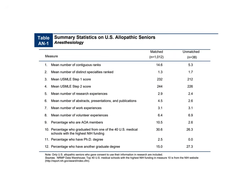The mean number of distinct specialties ranked is 1.3, meaning most people applying to anesthesia are solely applying to anesthesia, though some rank additional specialties. Unmatched students ranked 1.7 specialties, meaning they were more likely to hedge with a second specialty. The mean USMLE Step 1 score for USMD students who matched was 232, compared to 212 for those who didn't. The mean USMLE Step 2 score for those who matched was 244, versus 226 for those who did not match.